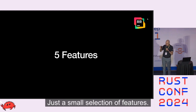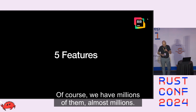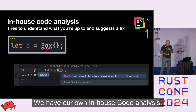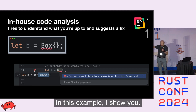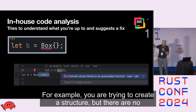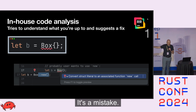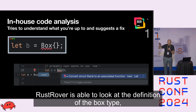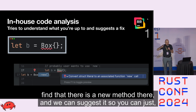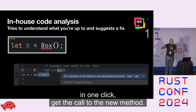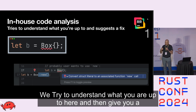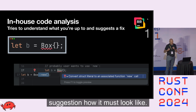Just a small selection of features — we have almost millions of them. Feature number one: we have our own in-house code analysis. For example, if you are trying to create a structure but there's no structure literal like that, it's a mistake. RustRover is able to look at the definition of the Box type, find that there is a new method there, and suggest it so you can, in one click, get the call to the new method.